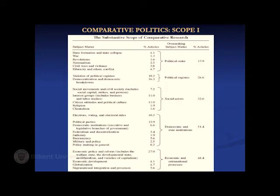So when we look at this again: democracy, democratic institutions, state institutions form a big chunk; then economic processes, policies, extranational processes including globalization; then social actors — social movements, interests, associations, interest groups, citizens, political culture; then political regimes — different types, democratization, democratic stability and breakdown; followed by order — states, revolutions, nationalism, civil war. These are the overarching subject matters reflecting the scope of comparative politics that we really focus on.